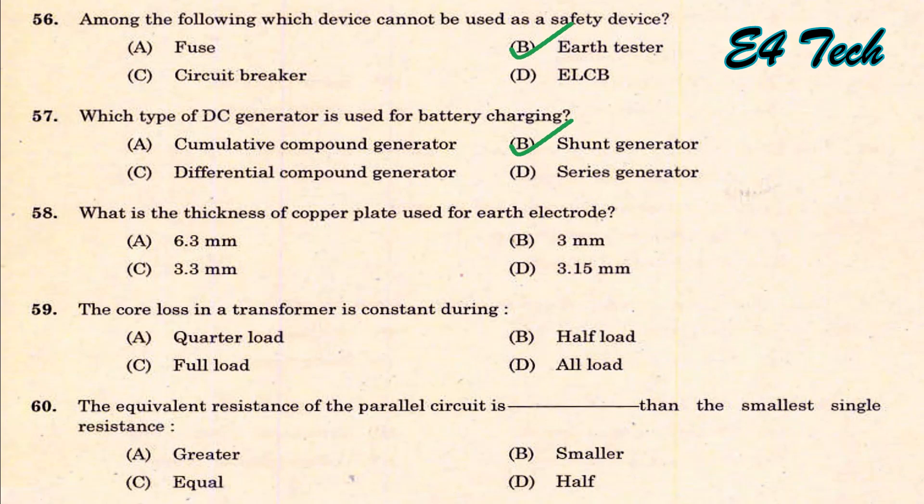What is the thickness of the copper plate used for an earth electrode? The earth electrode uses a copper plate of 3.15 mm thickness. That is option D.